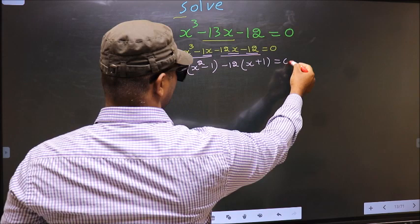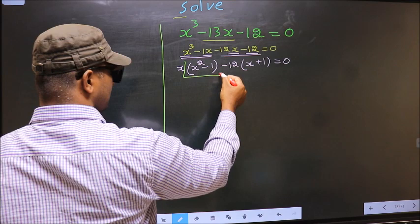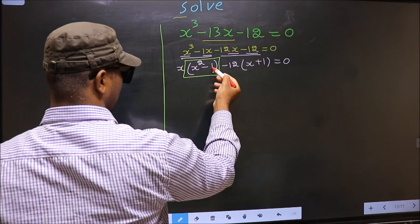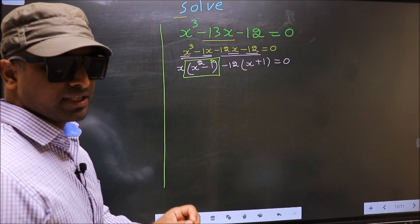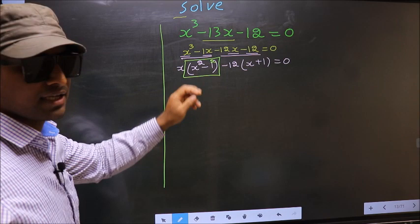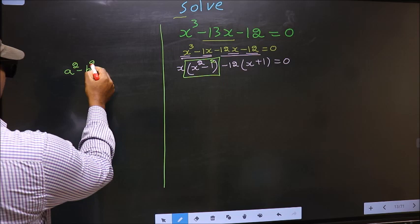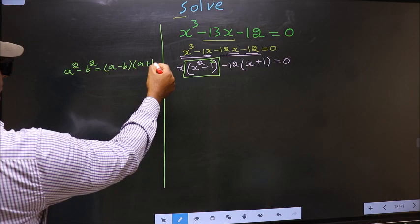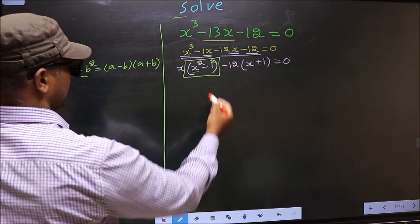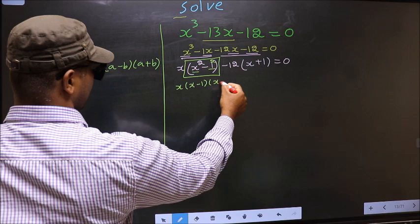Now observe this bracket. We have x squared minus 1 squared. Even putting the square on 1 makes no difference, but it allows us to apply the formula a squared minus b squared equals (a minus b)(a plus b). In place of a we have x, in place of b we have 1. So we get (x minus 1)(x plus 1).